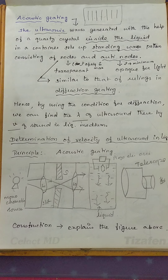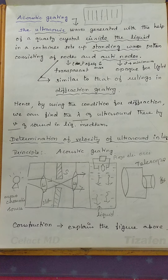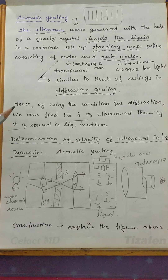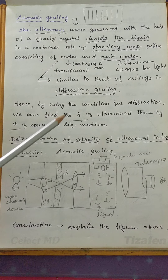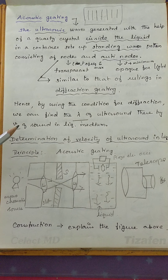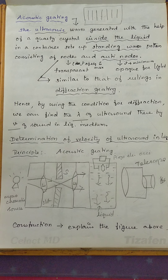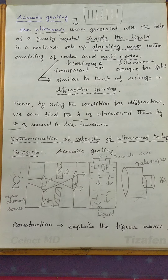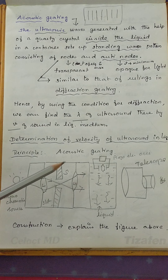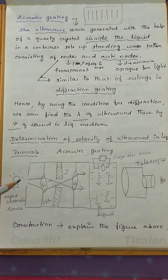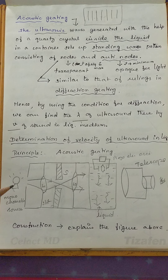Acoustic grating resembles a diffraction grating. By using the condition of diffraction, we can find the wavelength and velocity of ultrasound in a liquid medium. The basic principle employed here is acoustic grating. This is the schematic representation of the apparatus setup required to find the velocity of ultrasound in a liquid.